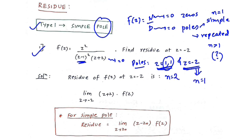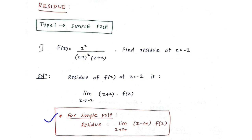Since z equals minus 2 is a simple pole, this is a Type 1 problem. The formula for the residue at a simple pole is: residue equals limit as z tends to z-naught of (z minus z-naught) into f of z, where z-naught is the pole.